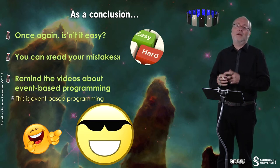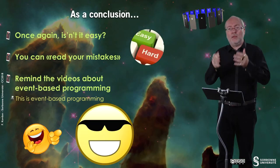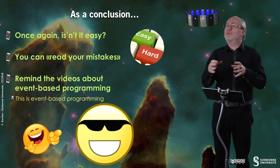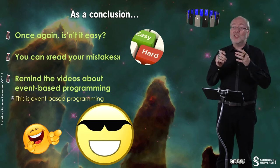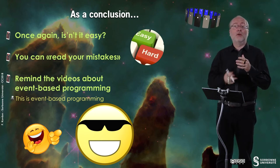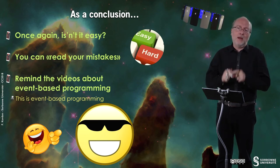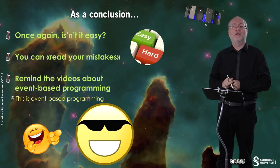And once again, remember the videos at the beginning of this course — the first week about event-based programming — because what you are doing here is really event-based programming. The associate handlers method, a target is the association of a given handler. So once again, as you can do at low-level programming with interruptions or exceptions, you can change, during the execution of the program, the handlers that are associated to a given event.